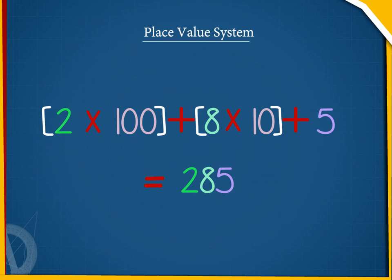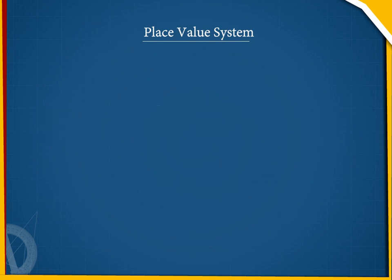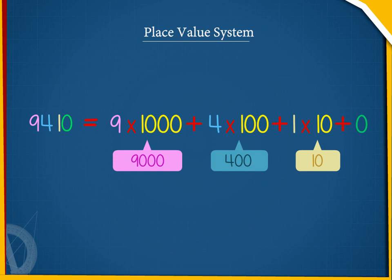Similarly, in a four-digit number, 9,410, each digit has a different place value.